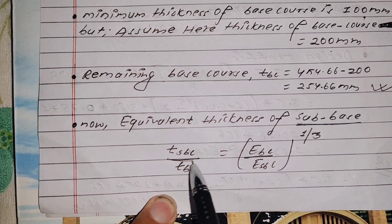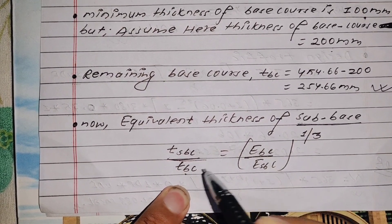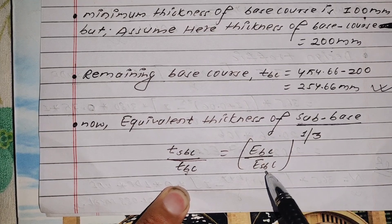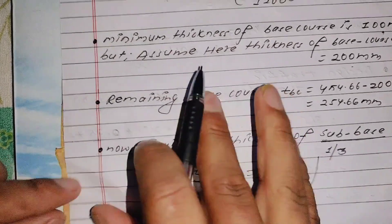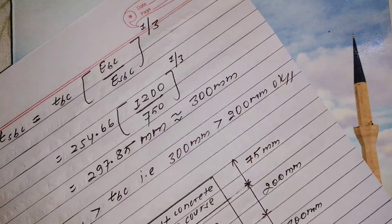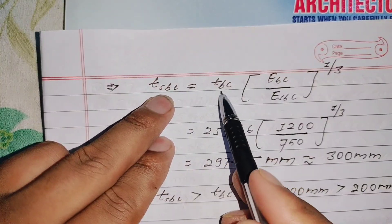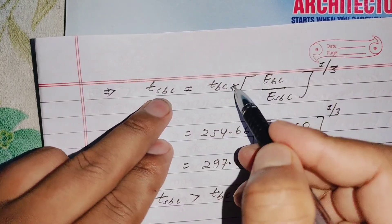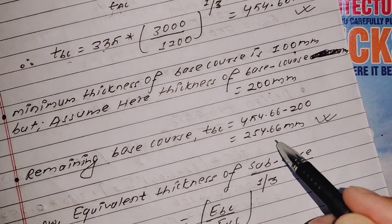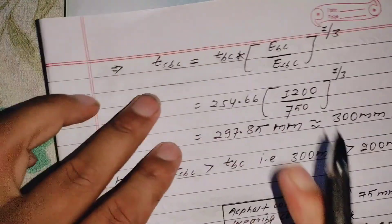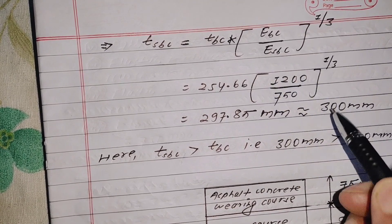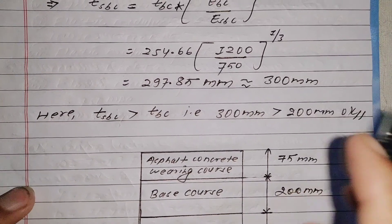For the sub-base course thickness, we use the same ratio formula T1/T2 = (E2/E1)^(1/3) with the elastic modulus of the base course and sub-base course. The elastic modulus of sub-base course is 750 MPa. Putting these values into the equation gives a sub-base course thickness of approximately 297.85 mm, so we adopt 300 mm.